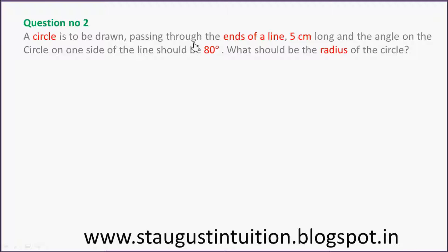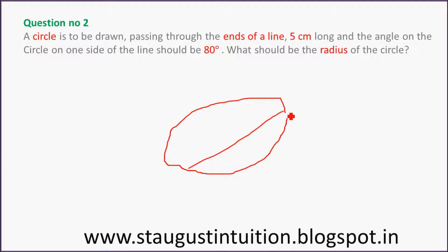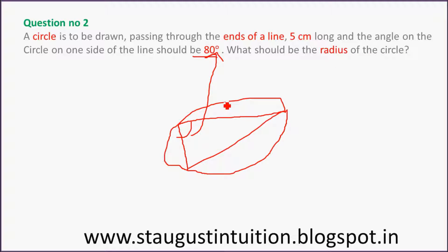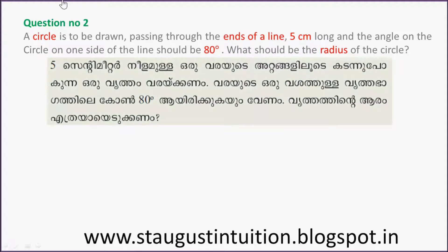This circle is to be drawn passing through the ends of a line. Suppose this is the line, and the angle on the circle on one side of the line should be 80 degrees. What should be the radius of the circle? The line is 5 cm long.